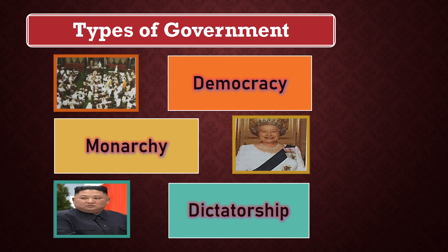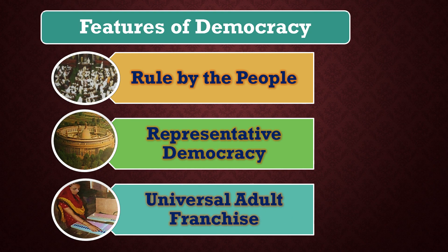In our country India we have democracy — a democratic form of government. Let's know about the features of democracy. The first feature is rule by the people. In democracy, the most important feature is the rule of the people. The basic idea of democracy is that people rule themselves by participating in the making of rules. People's elected representatives in the form of MPs sit in parliament — which is for making laws — and together they make laws for the country. So indirectly, the power to make laws is in the hands of the people.